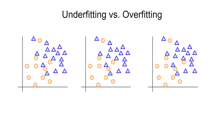In our classification example we are generally trying to separate the features of two or more classes. Here is a very simple example of classification with only two dimensions. This would correspond to a dataset where each sample has only two features that we are feeding to the model. Because it's only two dimensions, we can easily plot all or a subset of our samples. For the sake of this example, let's say that this is the entire training set.